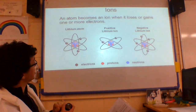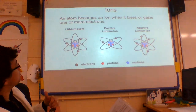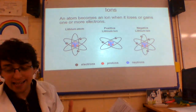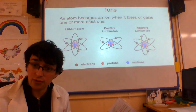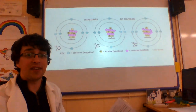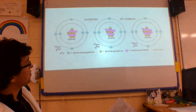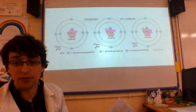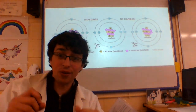And here we've got some examples. An atom becomes an ion when it loses or gains one or more electrons — gaining electrons becomes more negative, losing electrons becomes more positive. Whereas an isotope is simply where we have the same number of protons and electrons, but a different number of neutrons.